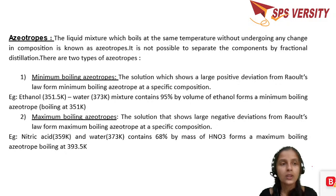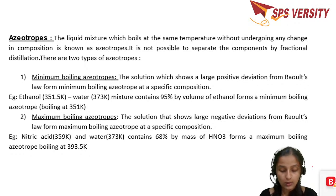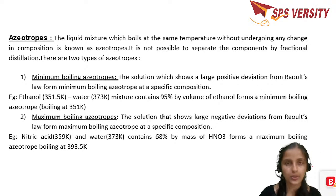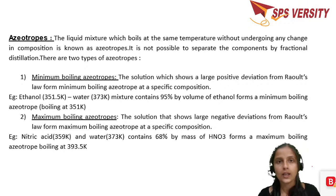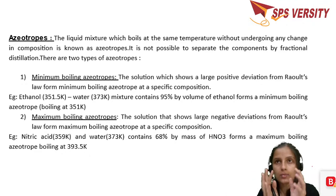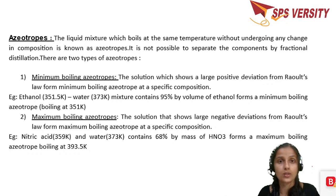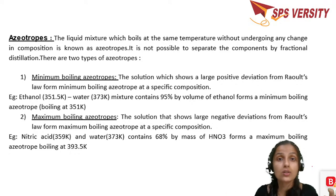Now we come to an important concept — azeotropes. Azeotropes are liquid mixtures called constant boiling mixtures. You have a binary mixture of two components with different boiling points, but at some particular composition they boil at the same temperature and cannot be separated by regular physical methods. They boil at a constant temperature with no change in composition.